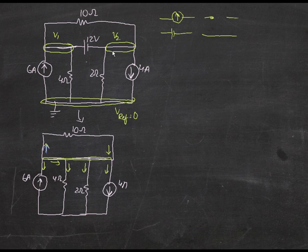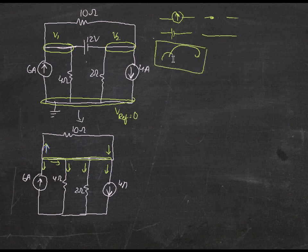You still need the individual nodes to be identified. Remember in supermesh analysis we had those i1 and i2 currents — even if the current was moving through the whole loop, you still needed the individual currents for calculation. Similarly, you would need v1 and v2 here too. So let's write the equations.